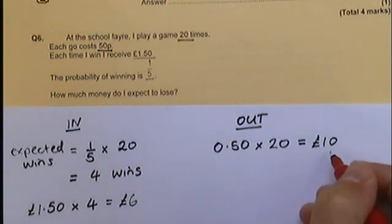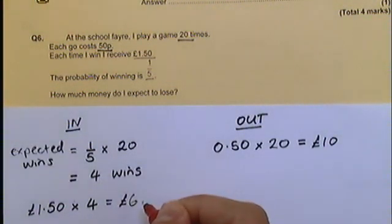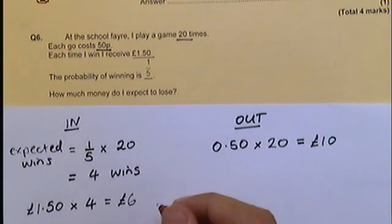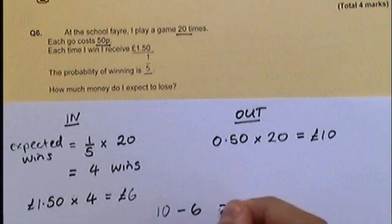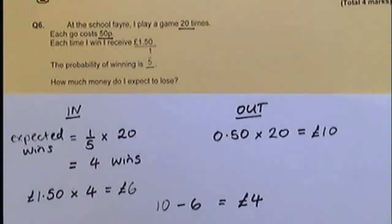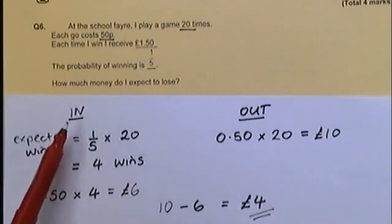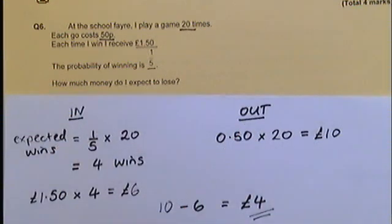So remember, I've paid out £10 but I've got £6 back. Am I better off? Well, I paid out a £10 note, and now I've got £6, so I'm not better off — in fact, I've lost money. The amount of money that I've lost is £10 take away £6, which is £4. So I would expect to lose £4 on this game. It's really important to keep track of how much money is coming in and how much money is going out, and remember from whose perspective you are working.